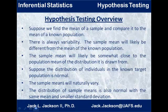We're going to assume here that the distribution of individuals in the known target population is normal. The sample means will naturally vary, so the distribution of sample means is also normal with the same mean and smaller standard deviation. In fact, all we really need is for the distribution of sample means to be normal — basically the same assumptions we had when doing z-interval confidence intervals.